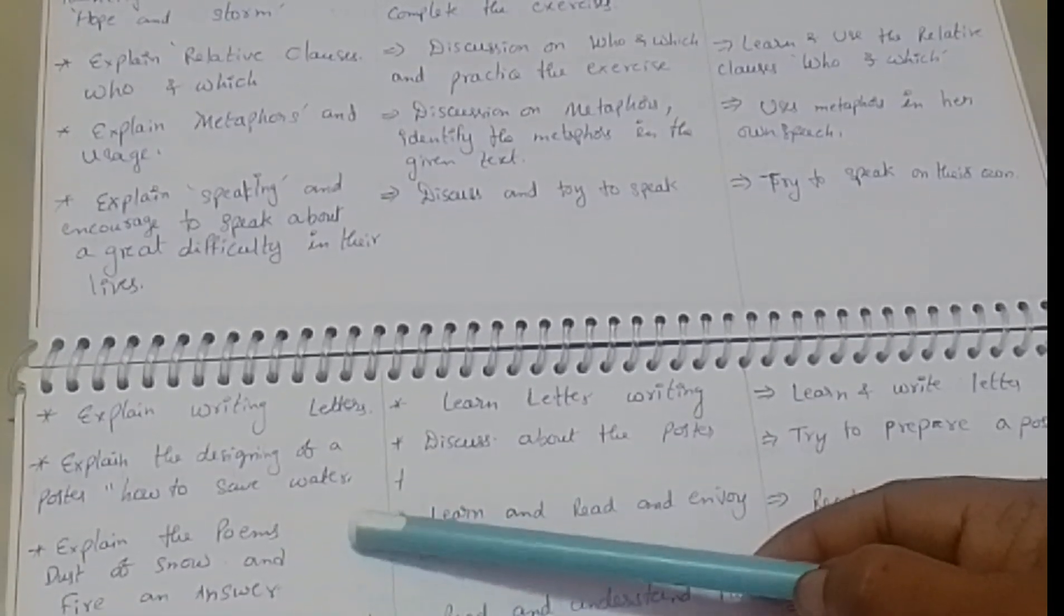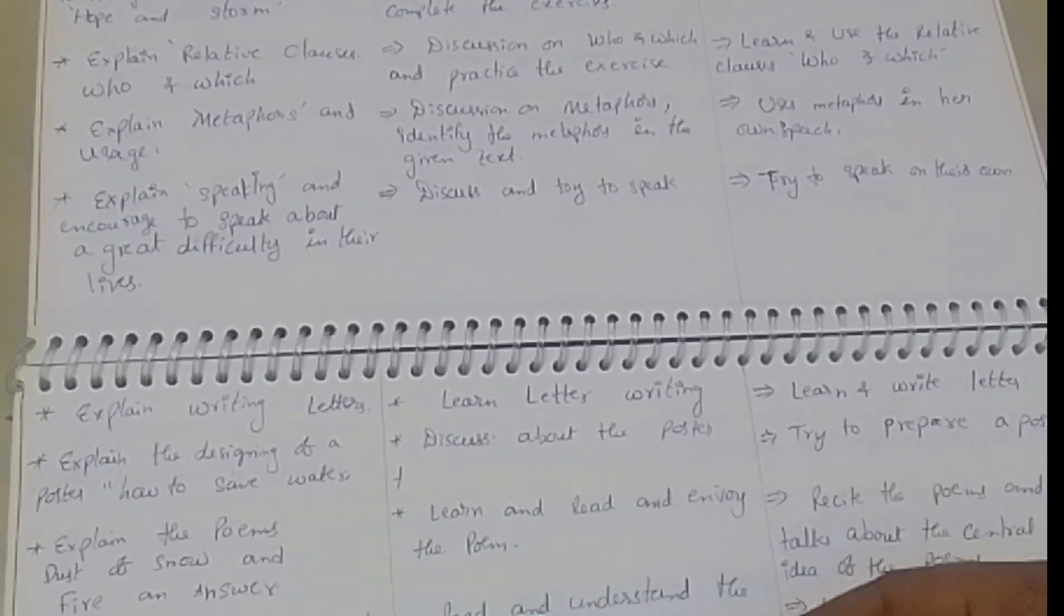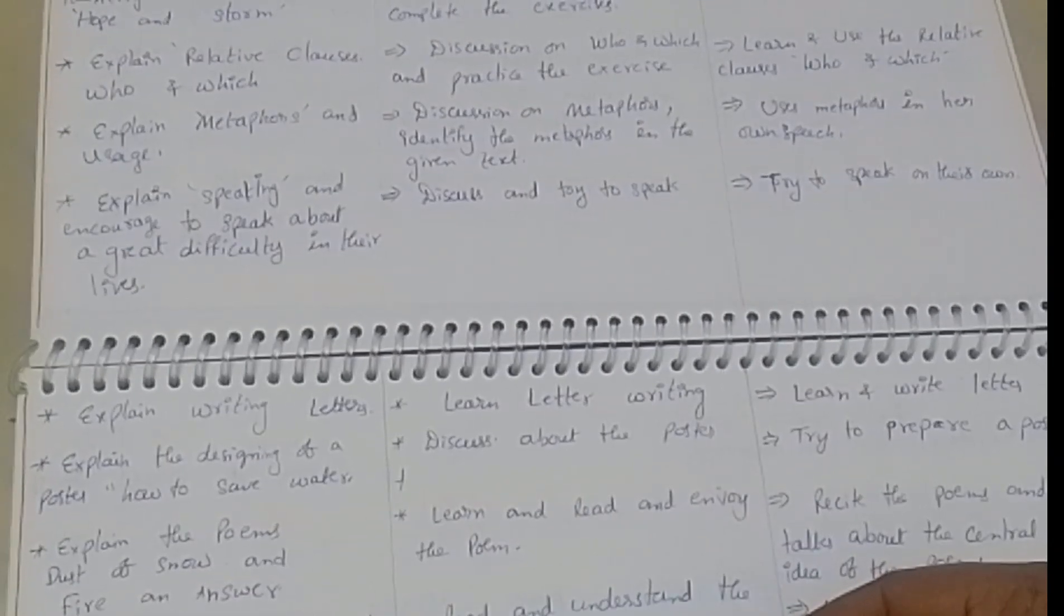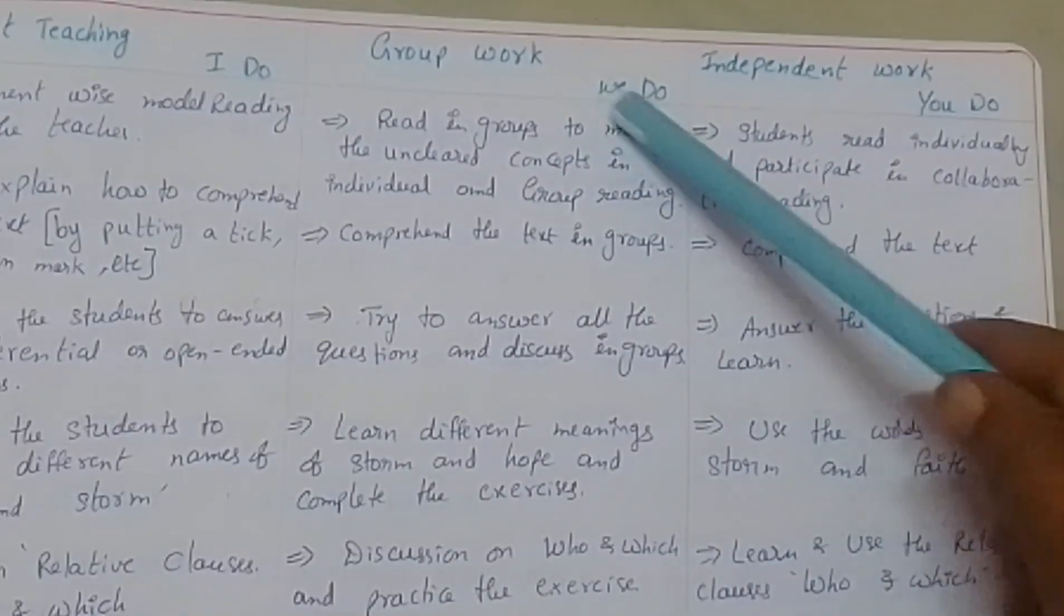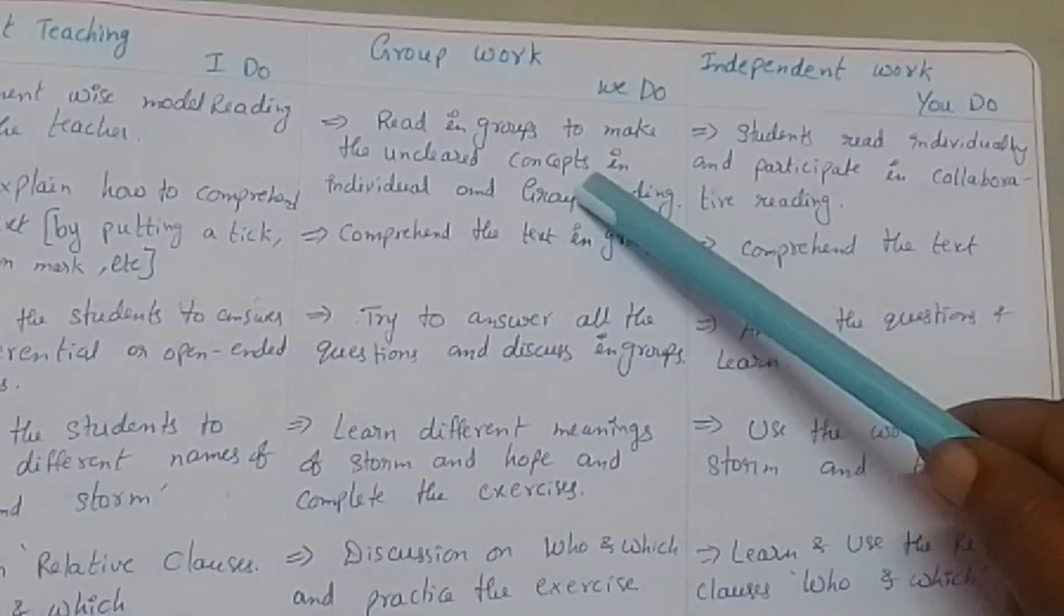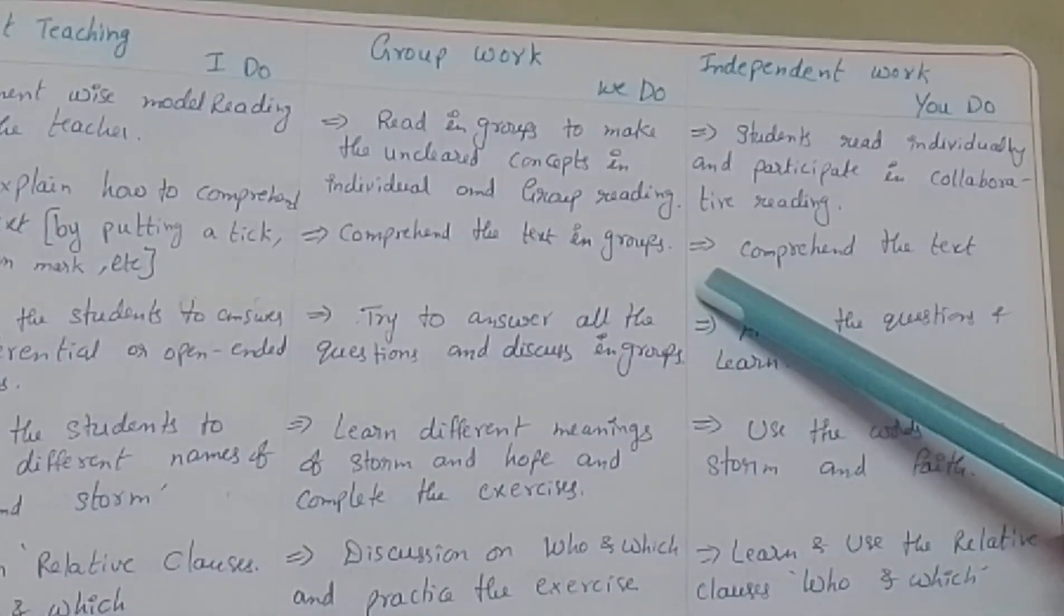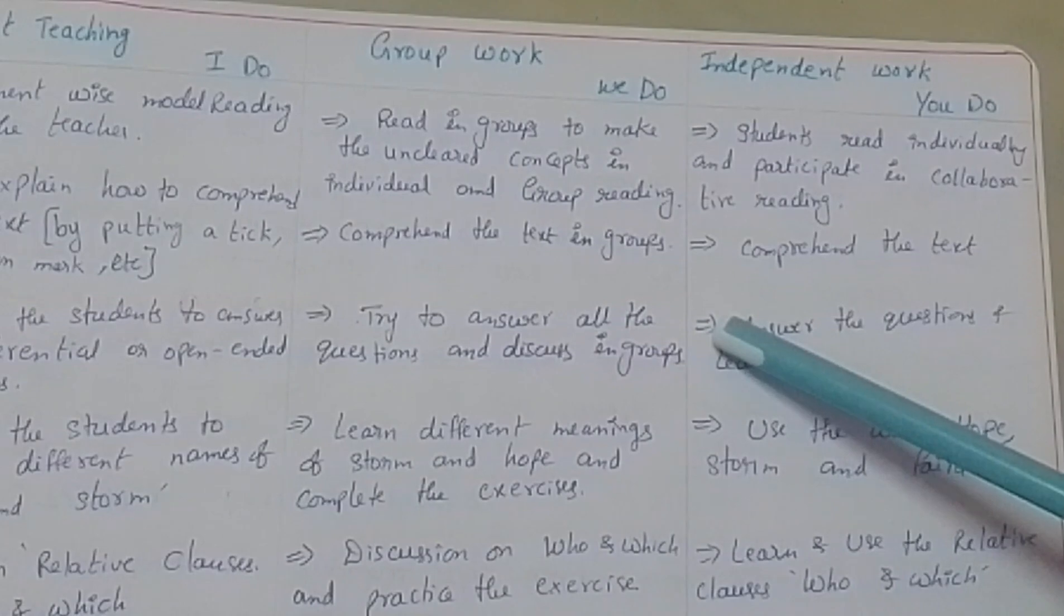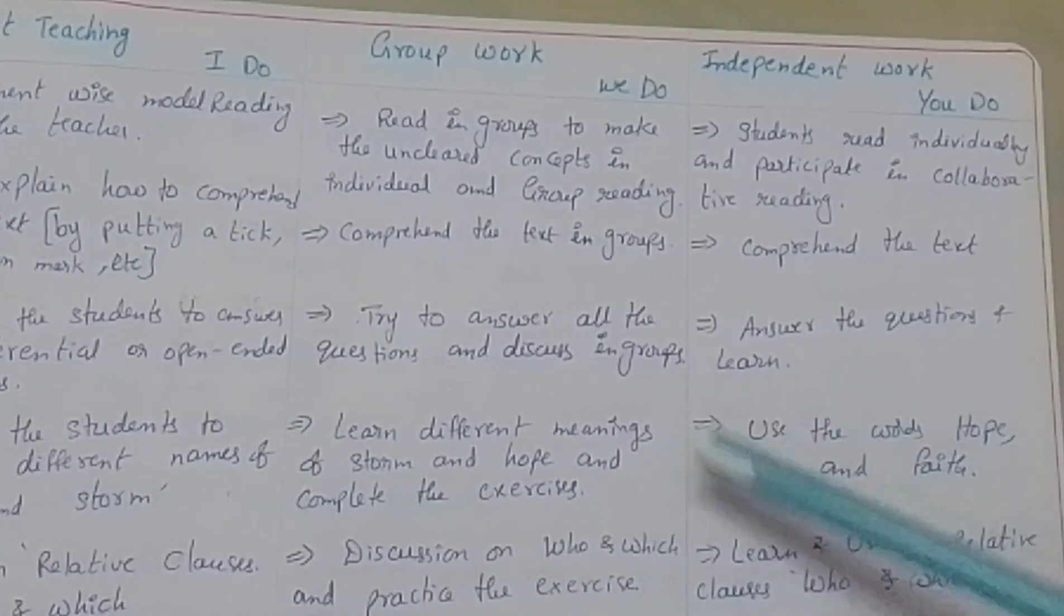Group work - we do: Read in groups to make the unclear concepts clear in individual and group reading. Comprehend the text in groups. Try to answer all the questions and discuss in groups. Learn different meanings of storm and hope and complete the exercises.